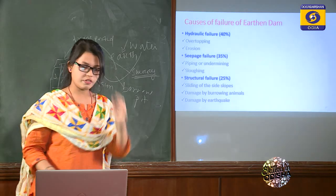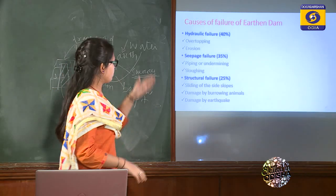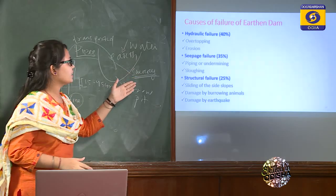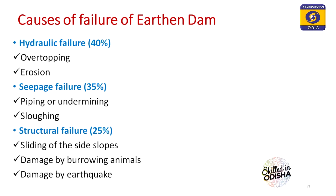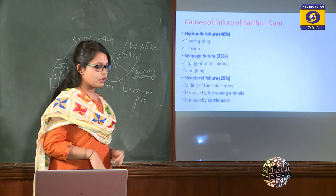The causes of failure of earthen dams fall into three categories: hydraulic failure due to water pressure, accounting for about 40% of failures; seepage failure due to seeping water, accounting for about 35%; and structural failure due to the dam's own structure, possibly caused by faulty construction, improper compaction, or improper design.